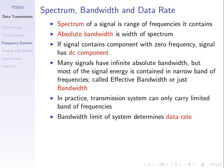Because a transmission system can only carry a limited range of frequencies, the bandwidth and the data rate are related. Generally, the larger the bandwidth of our signals or our transmission system, the larger the data rate we can achieve.